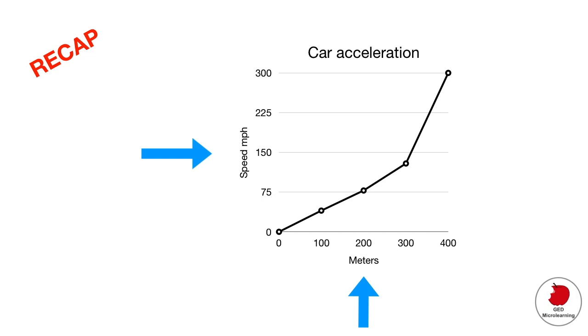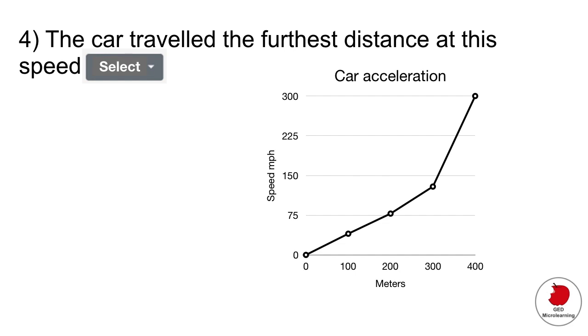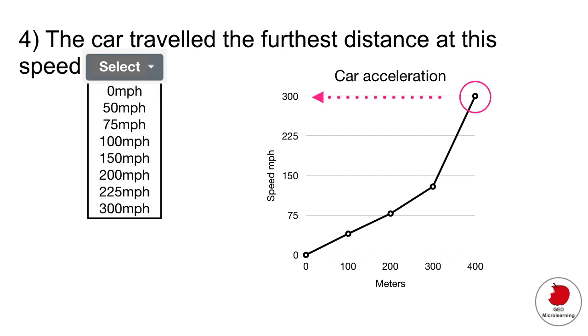It's telling us in the question to find at what point the car traveled the furthest distance. You would look at your x-axis in meters and select the furthest distance, 400 meters, and then just follow that to the y-axis to find out the speed in miles per hour, which you can see is 300.